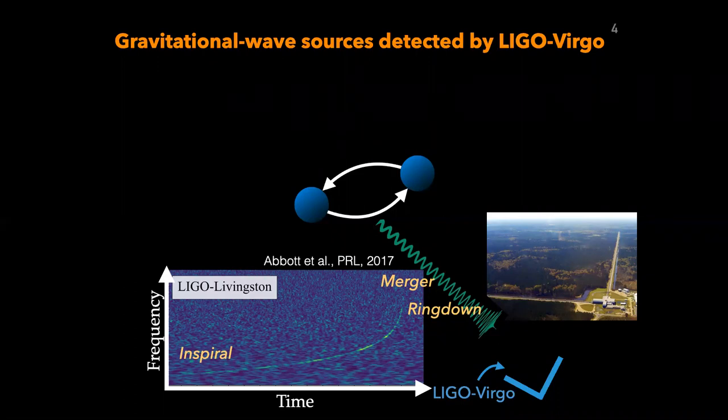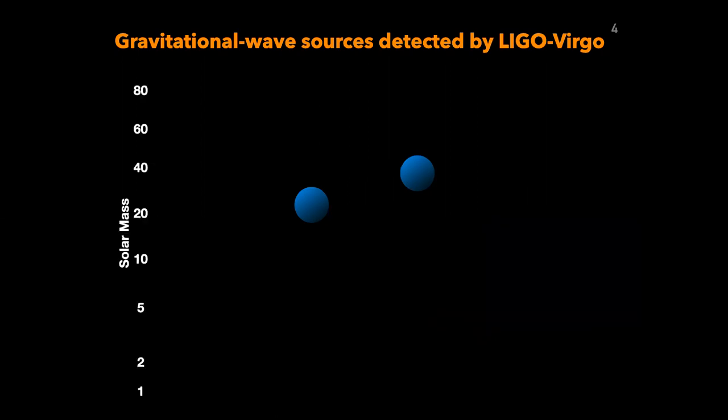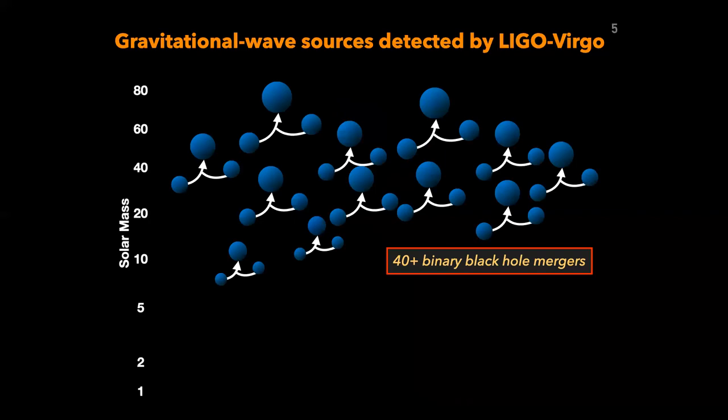We take the signal we receive and reconstruct the gravitational wave waveform underlying within it. There are many physical parameters we can reconstruct, for example the mass of the system. Let's say these two black holes are around 30 solar masses — after they merge, they become around 60 solar mass black holes. For binary black hole mergers, we already have more than 40 of them, with a variety of masses ranging from around 5 solar masses up to above 50 solar masses.